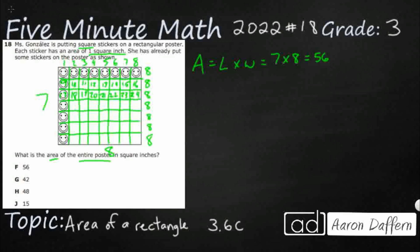Let's see where some of these other answers are coming from. So 42 — that's going to be seven times six. I'm not sure where we would get six from, because it's seven times eight. But if you just counted the inside and didn't count the smiley face stickers that are already placed on the poster, you'd get seven across and six down — that's just counting the inside squares.